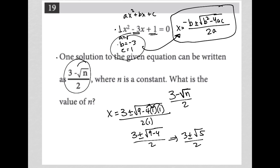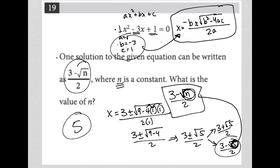That means we can split this into (3 + √5)/2 and (3 - √5)/2, which looks exactly like what the question told us one solution should look like. Since the question is asking for the value of n under the radical, we found it to be 5. So our answer is 5.